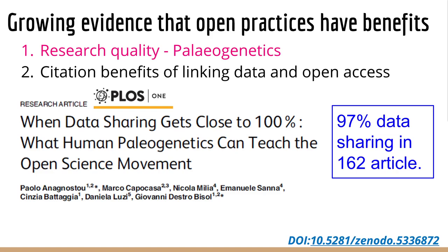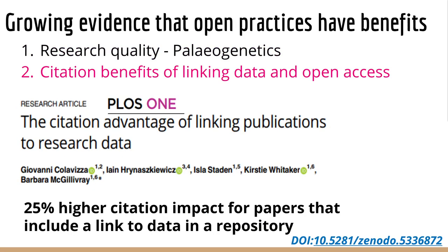Moving on now to the benefits of open practices in general: there is growing evidence from other disciplines that adopting open practices has clear benefits for researchers and research communities. One example in terms of community impact is in paleogenetics. There has been a drive to implement open data sharing practices across their community, which focused efforts on educating students and early career researchers in these skills. This developed a much more open and transparent way of working, and resulted in turning the discipline from one that had previously had questions hanging over it in terms of data quality, to a well-respected community with rigorous and reliable scientific practice. There are also studies demonstrating the citation impact of making research articles open access, including a recent article by Colaviza et al., 2020, that found a 25% higher citation impact for papers that included a link to their data in a repository.